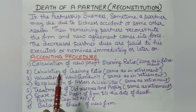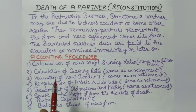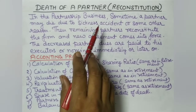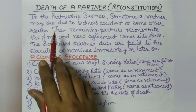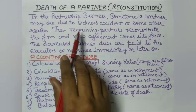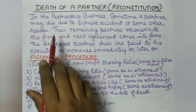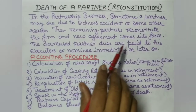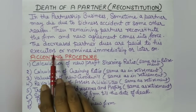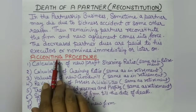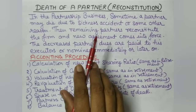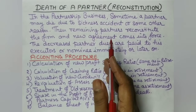Hello everyone, once again to Commerce Made Easier. In today's lecture of Accountancy Class 12, we will continue the chapter on retirement and death of a partner. In this session, we will discuss the death of a partner topic. In a partnership business, sometimes a partner may die due to sickness, accident, or some other reason.